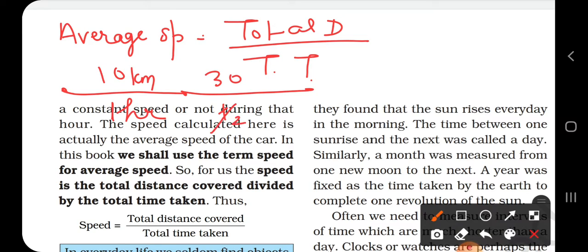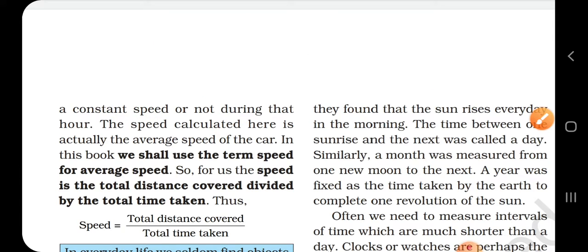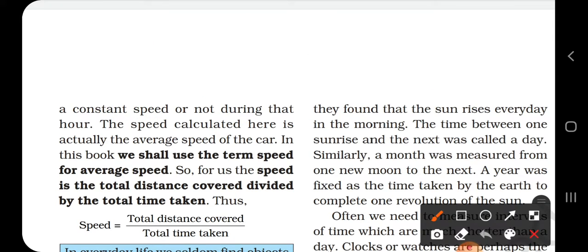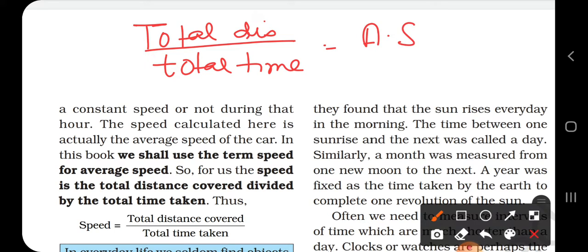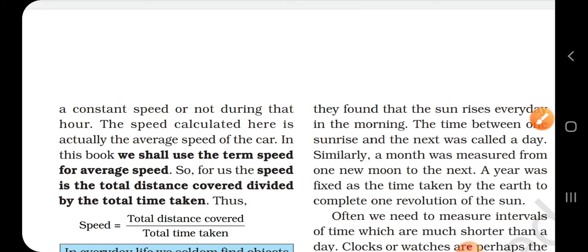Then thirty kilometers took one and a half hours. So average speed is total distance. What is the average speed? Total distance that the body has covered divided by total time. How much total time was taken? That is called average speed.